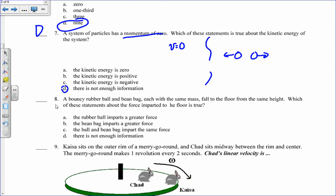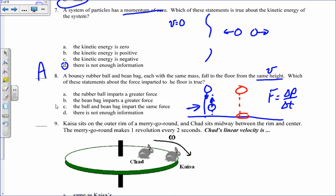Bouncy ball and a bean bag, each with the same mass fall to the floor from the same height. That means they both have the same speed when they hit the ground. Which of these statements about the force imparted to the floor is true? If I drop the bouncy ball, it goes to the floor, goes down, comes back up again. It bounces up. However, the bean bag goes down, and it stays on the floor. It doesn't bounce. Because this ball bounces, it has a greater change in momentum. So there's a greater force since my force is proportional to my change in momentum. So that would be A for number eight.